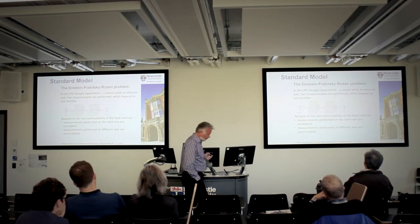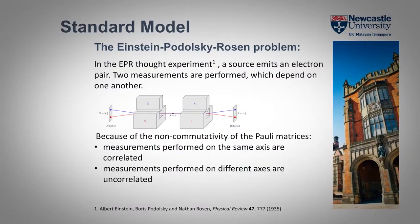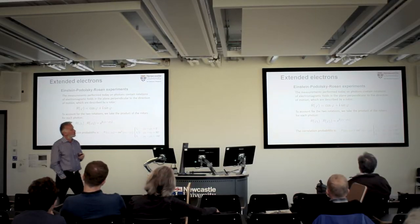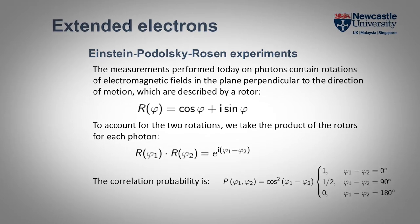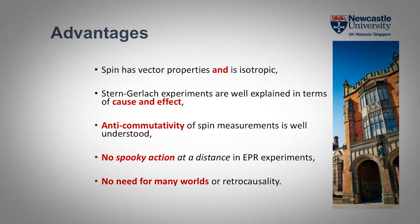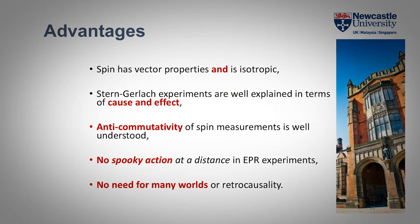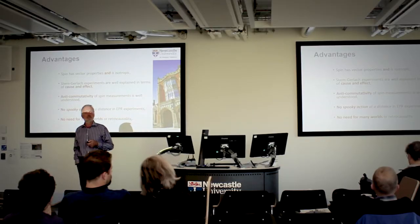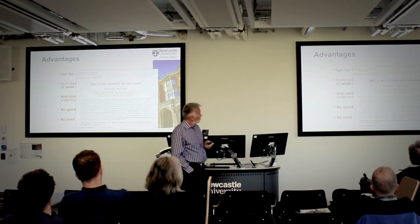There's an additional problem, stated in the early 1930s by Einstein, Podolsky, and Rosen — and similarly the Schrödinger's cat problem. In the new approach, rotations and phases, and the correlations you calculate, are all in three dimensions. The advantages are: spin has both vector properties and is isotropic; Stern-Gerlach experiments are explained in terms of cause and effect; anti-commutativity is well understood; there's no spooky action at a distance; and there's no need for any of the other fancy quantum mechanical concepts. This paper was published last year and shows how this actually works.